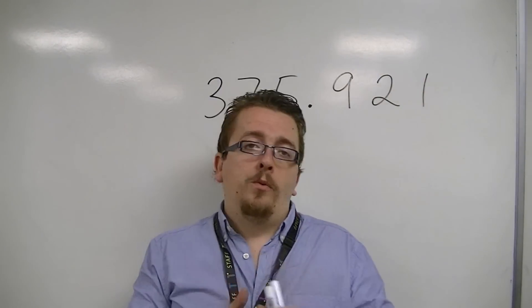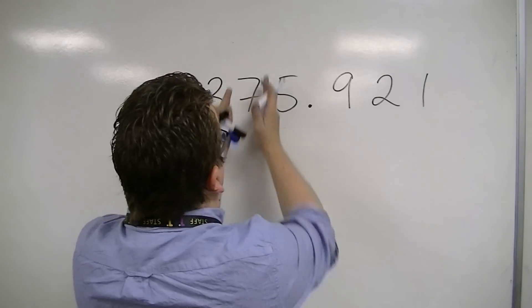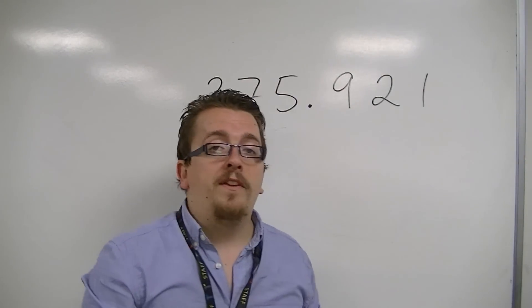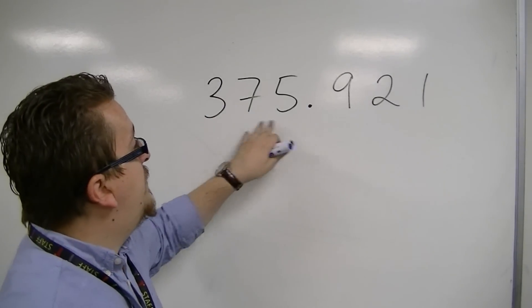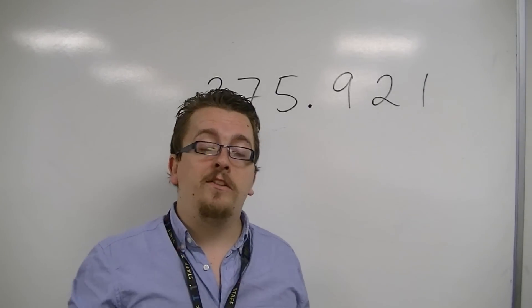then you'll notice that the number is split up into columns. And these are represented by their place value. So each of these numbers has a distinct value.